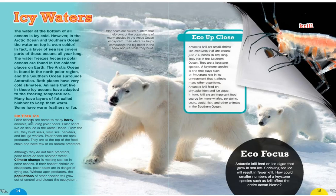Polar oceans are home to many hardy animals such as polar bears. Polar bears live on sea ice in the Arctic Ocean, hunting seals, walruses, narwhals, and beluga whales. Polar bears are apex predators — at the top of the food chain with few or no natural predators. However, climate change is melting sea ice in polar oceans. If their habitat shrinks or disappears, polar bears are in danger of dying out. Without apex predators, the populations of other species will grow out of control and disrupt the ecosystem.